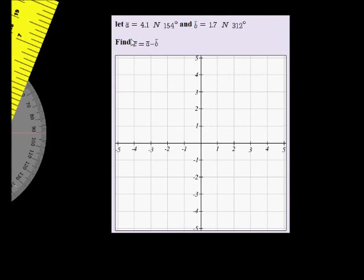So in this question, we are given vector A is 4.1 Newtons with a 154 degree bearing, and vector B is 1.7 Newtons with a bearing of 312 degrees. They tell us that vector C we find by taking vector A minus B, so we must go and find vector C.